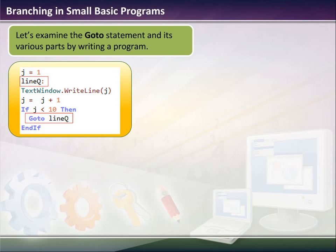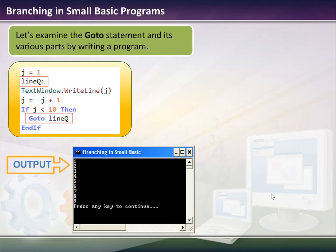So for example, if you look at the following code, we set j equal to one, and then we say lineQ to define the line, and then we say TextWindow.Write(j), and then j equals one plus one, and then we put in here an if-then statement. Now, if we just do an endif, it will only go to lineQ if the statement is true. Once this statement is false, it just goes to endline.